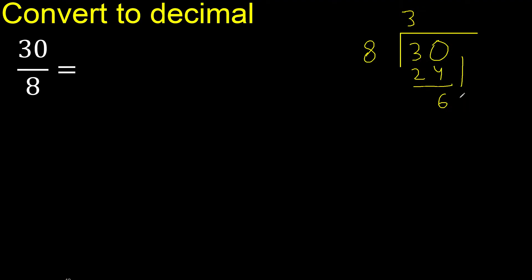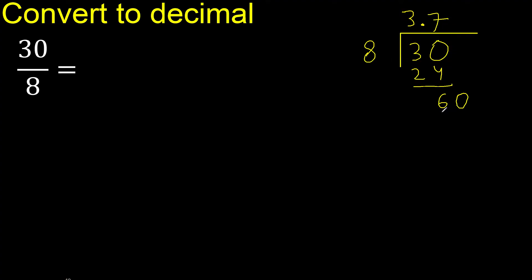Next, there is no number, therefore complete — always complete with 0. Here, with point: 0 point. 60. 8 multiplied by 8 is greater; multiplied by 7 is 56. Subtract.